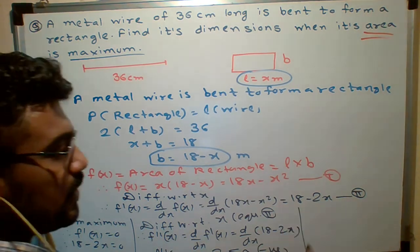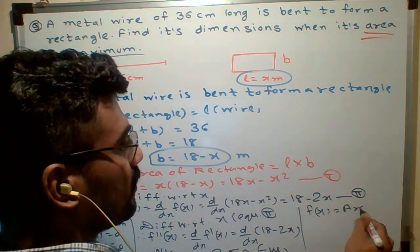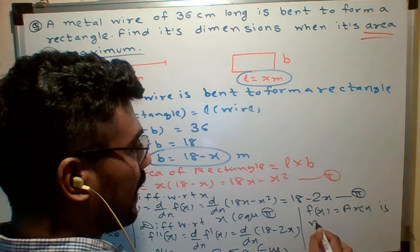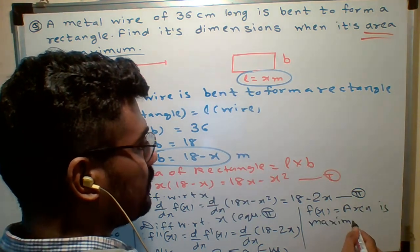Minus 2 means negative. Negative means what? F of x is, f of x means what? Area. Area is what? Maximum. We have to find dimension.